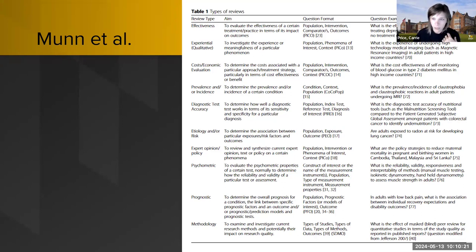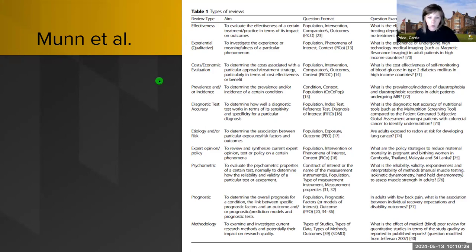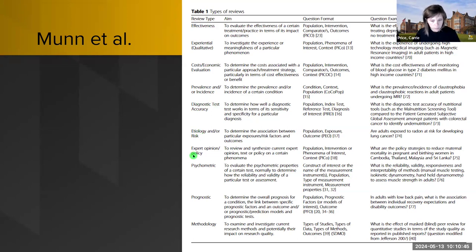Grant and Booth set out a framework for what they call a 'systematized review,' which might be more appropriate for a student project. It's really tough to have students do a systematic review in a semester, especially on their own. The MUN article talks about different types of systematic reviews: effectiveness, qualitative, costs and economic evaluation, incidence and prevalence, diagnostic test accuracy, etiology and risk, expert opinion and policy, psychometrics, prognostic, and methodologies.